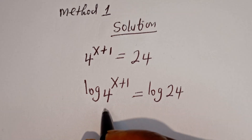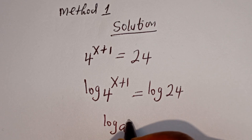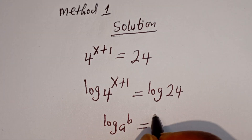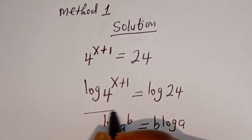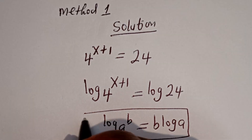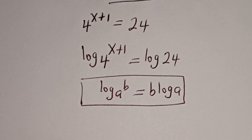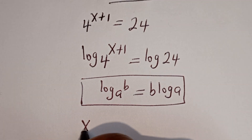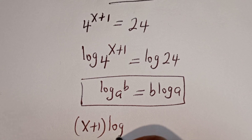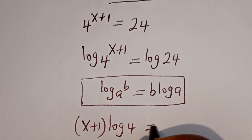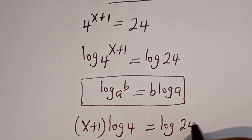Take note of this: if you have log A to the power of B, this is equal to B times log A. Applying this rule, we can write x plus 1 times log 4 is equal to log 24.